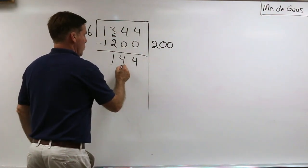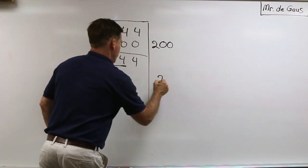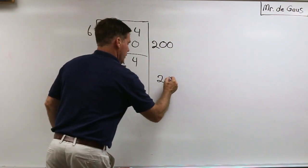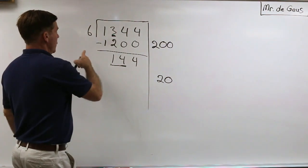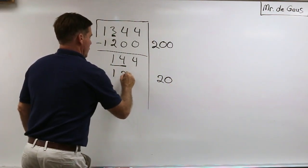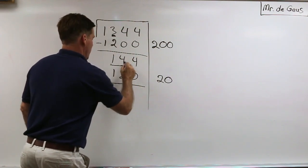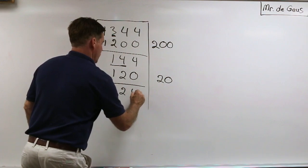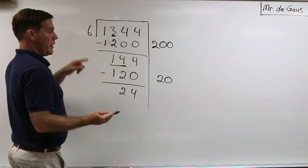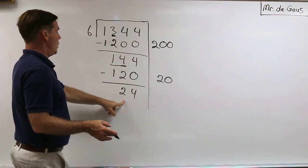So 6 goes into 14. 6 goes into 4, it doesn't go into 1, it goes into 14. I know it goes in there 2 times and that is in the tens place. So I'm going to go ahead and put a zero. So 6 times 20 is, 6 times 2 is 12, add the zero, go ahead and subtract. And I'm down here to 24.